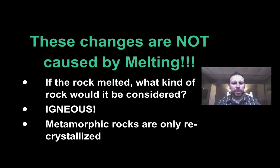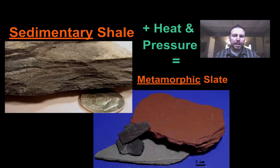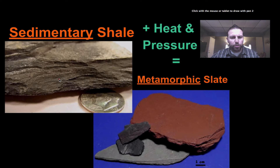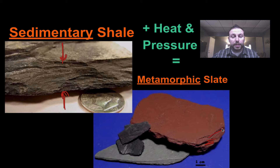The changes that occur to metamorphic rock do not actually melt the rock. There's enough heat to get what we call a recrystallization of the material. If it melted, it would become igneous rock — we're almost there, but not quite. All the minerals recrystallize. If we look at shale, that sedimentary rock with thin even layers, and apply pressure in the same direction those layers formed, it turns into metamorphic slate. You can still see some layering, but it looks smoother and more refined.